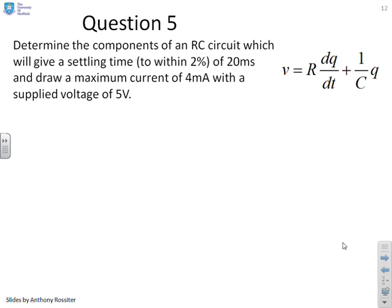Final question then, number five. Determine the components of an RC circuit, which will give a settling time to within 2% of 20 milliseconds, and draw a maximum current of 4 milliamps with a supplied voltage of 5 volts. Now the first thing to say is, at T equals 0, the current is maximum.